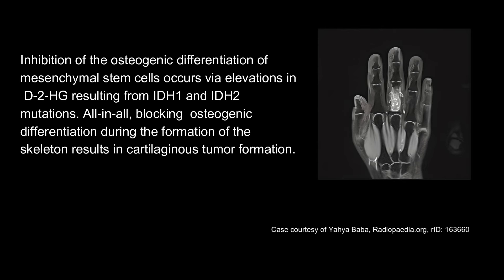Inhibition of the osteogenic differentiation of mesenchymal stem cells occurs via elevations in D2-HG resulting from IDH1 and IDH2 mutations. All in all, blocking osteogenic differentiation during the formation of the skeleton results in cartilaginous tumor formation.